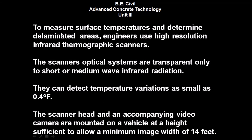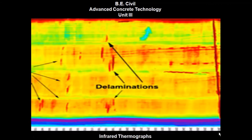To measure surface temperatures and determine delaminated areas, engineers use high-resolution infrared thermographic scanners. The scanner's optical systems are transparent only to short or medium wave infrared radiation and can detect temperature variations as small as 0.4 degrees Fahrenheit. The scanner head and an accompanying video camera are mounted on a vehicle at a height sufficient to allow a minimum image width of 14 feet. Here you can see the figure for infrared thermographs showing the delaminations.